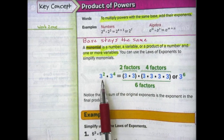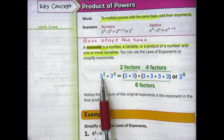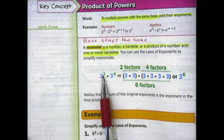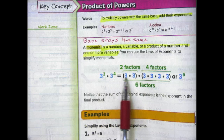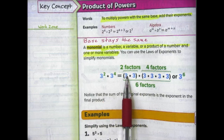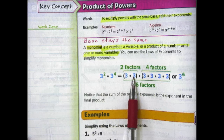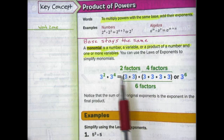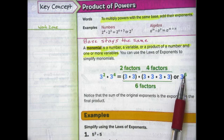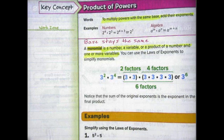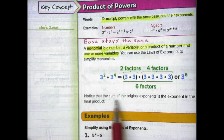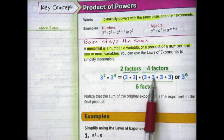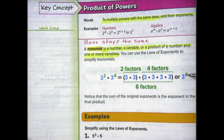Yesterday during our math minute, we worked a problem similar to this one. This one is 3 to the 2nd power times 3 to the 4th power. We know 3 to the 2nd means two factors of 3 — that's 3 times 3 — and 3 to the 4th means four factors: 3 times 3 times 3 times 3. Writing that whole expression using exponents, we get 3 to the 6th power — six total factors. Notice that the sum of the original exponents gives the exponent in the final product.